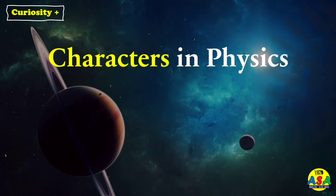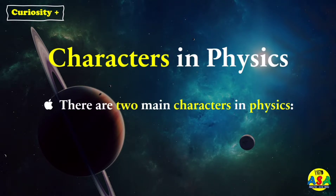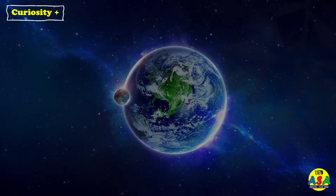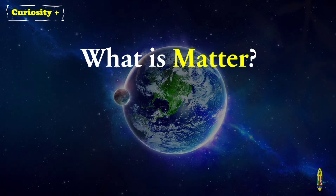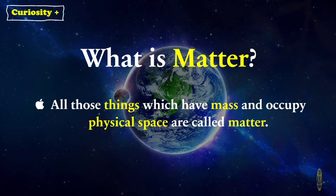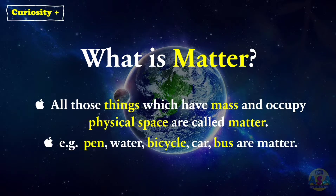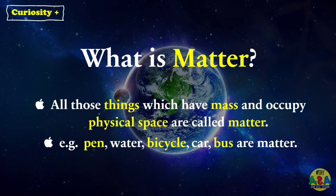Characters in physics. As per the definition, there are two main characters in physics: number one, matter, and number two, energy. Now the question is, what is matter? All those things which have mass and occupy a physical space are called matter. For example, pen, water, bicycle, car, bus — all are examples of matter.